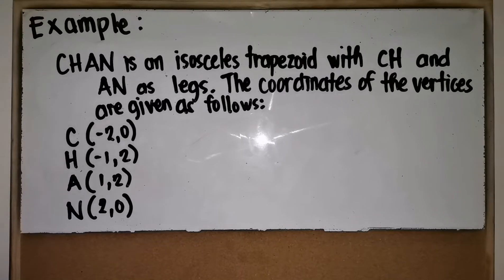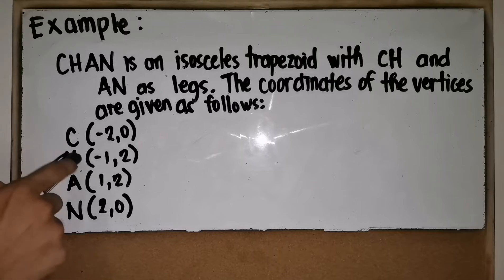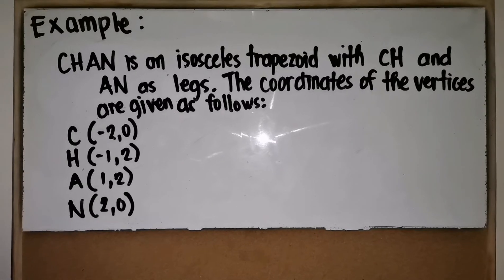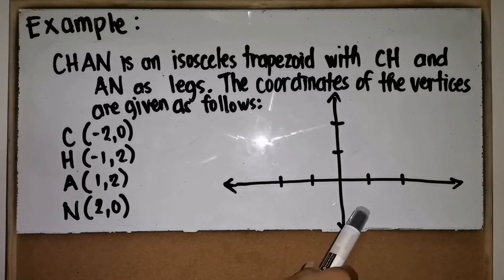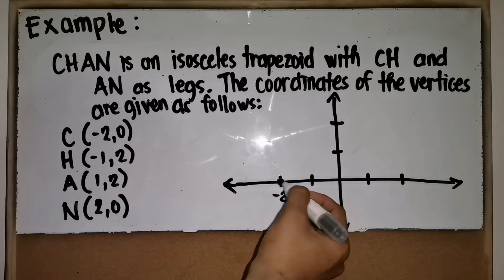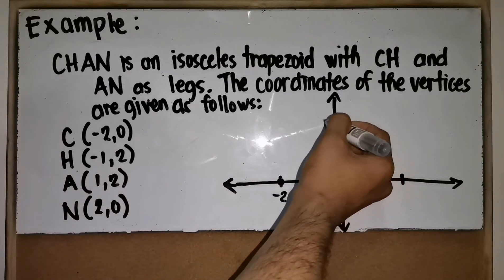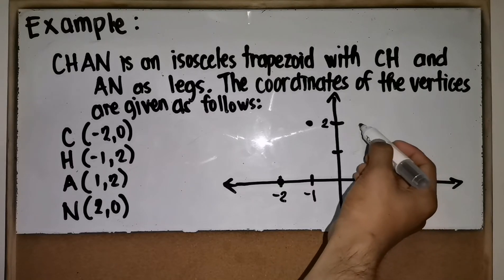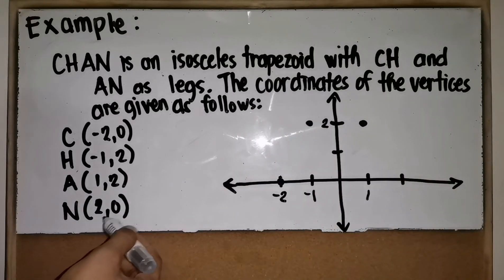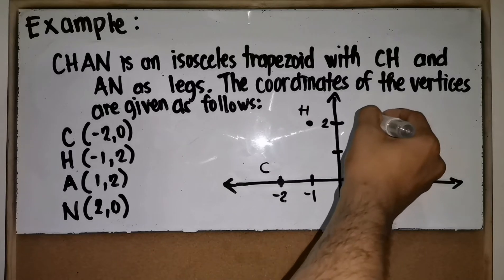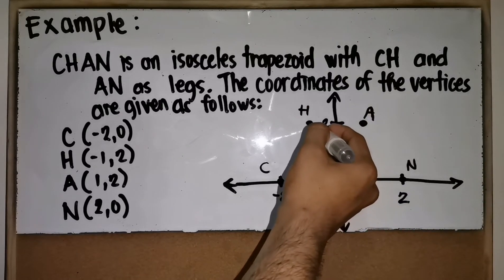Example: CHAN is an isosceles trapezoid with CH and AN as legs. The coordinates of the vertices are: C at negative 2, 0; H at negative 1, 2; A at 1, 2; and N at 2, 0. First, plot the coordinates. C is at negative 2, 0; H is at approximately negative 1, 2; A is at 1, 2; and N is at 2, 0. Connecting the vertices forms the isosceles trapezoid.